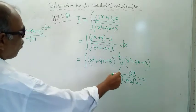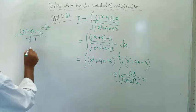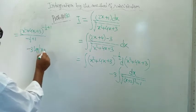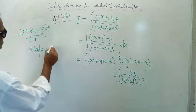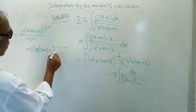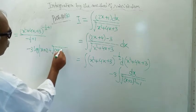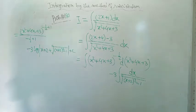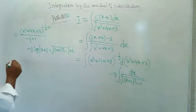And for this, this is minus 3 log of mod (x + 2) plus root over of that expression (x + 2) whole square minus 1, plus c, where c is constant of integration.